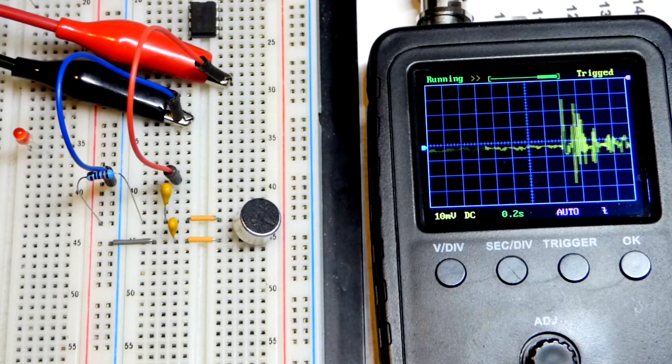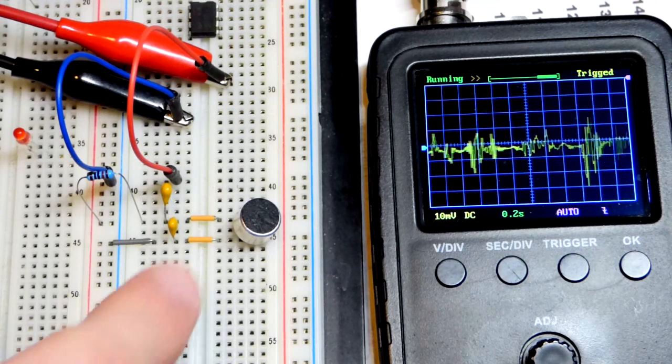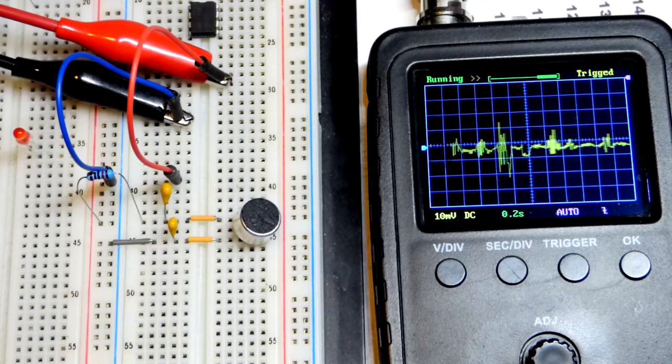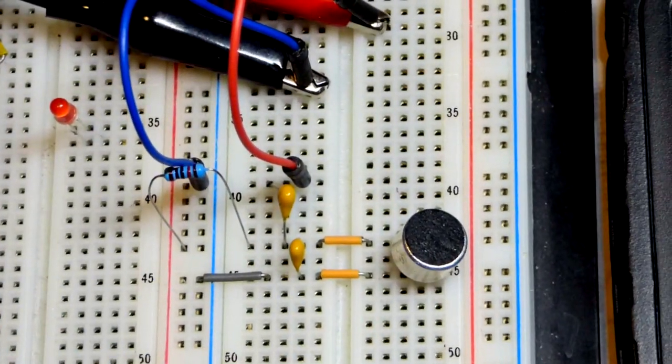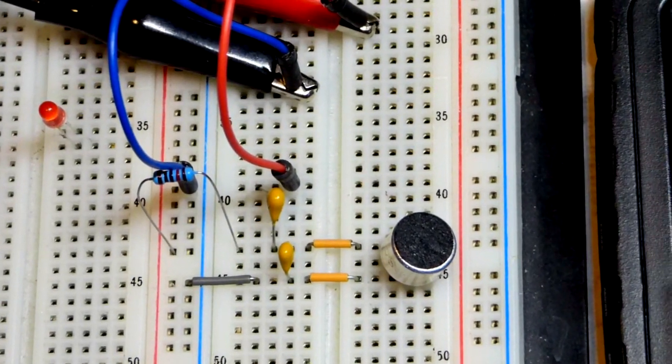But there you can see if I stay quiet, it gets quite a bit smoother than it does without the capacitor. So that was pretty important. This is a 10 kilo-ohm resistor right here.